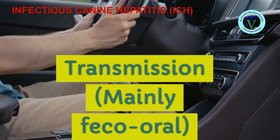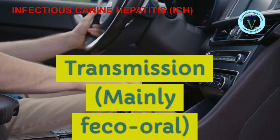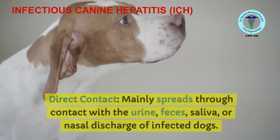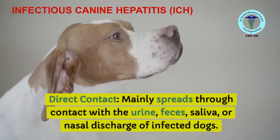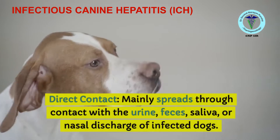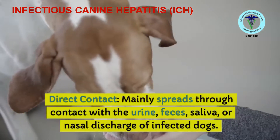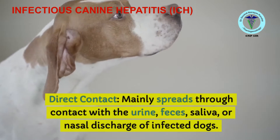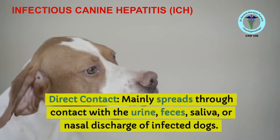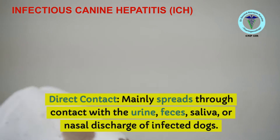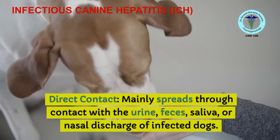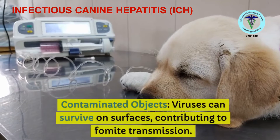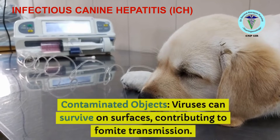The transmission is mainly by the feco-oral route and direct contact, mainly spreading through contact with urine, feces, saliva, or nasal discharge of the affected dog. Any dog coming in contact with an infected dog's urine or feces may contract the disease.